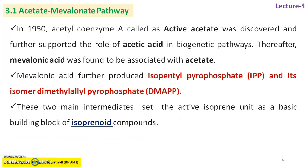In 1950, acetyl-CoA, the enzyme called active acetate, was discovered, further supporting the role of acetic acid in biogenetic pathways. Thereafter, mevalonic acid was found to be associated with acetate. It was hypothesized and then proved through various biosynthetic studies that mevalonic acid gets associated with the acetic group of acetyl-CoA, and thereafter produces isopentyl pyrophosphate and its isomer dimethylallyl pyrophosphate, which further leads to biosynthesis of cholesterol-like molecules and steroids.